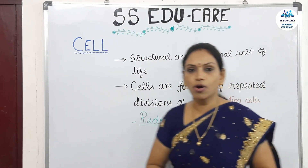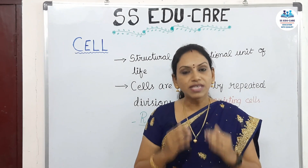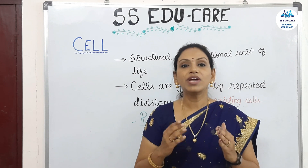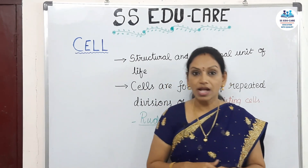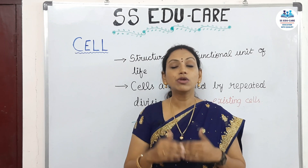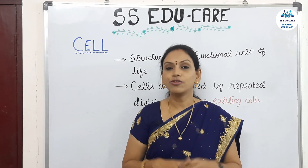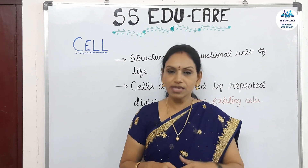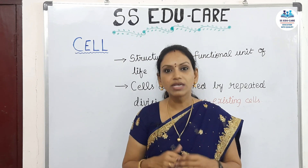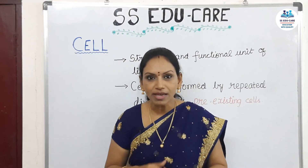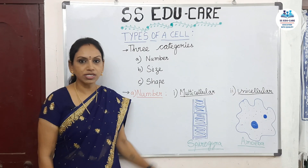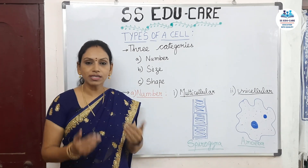How are these cells formed? Cells are formed by repeated divisions of pre-existing cells. The basic function of a cell is cell division. New cells are formed not from anywhere else but from pre-existing cells. A pre-existing cell breaks into two and forms a new cell. This was told by Rudolf Virchow.